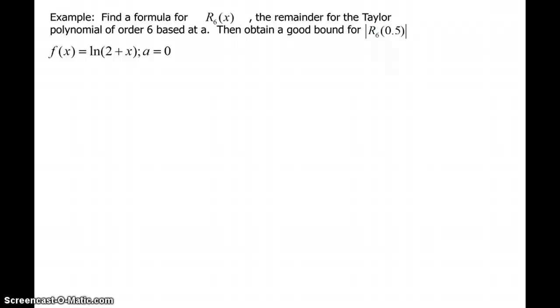A note on notation. Here is an example: find a formula for R_6(x), the remainder for the Taylor polynomial of order 6 based at a, then obtain a good bound for R_6(0.5). Here's our function: f(x) equals the natural log of (2+x), and we're centered at 0. The first thing we need to do is build p_6(x).